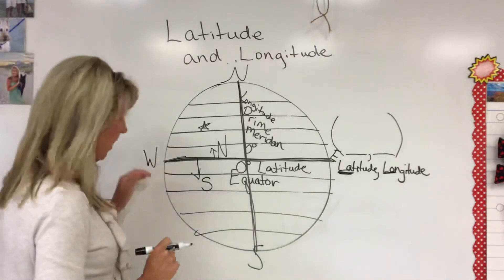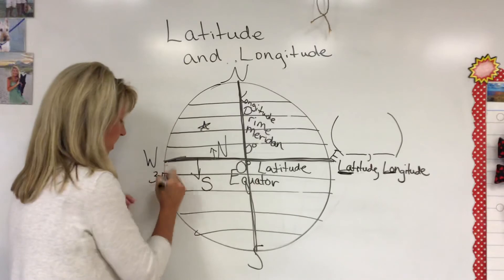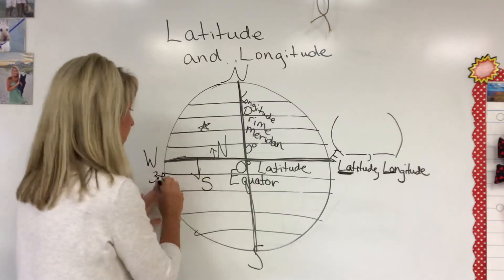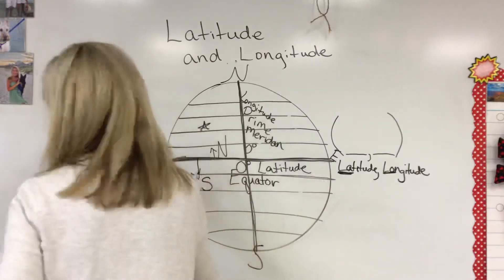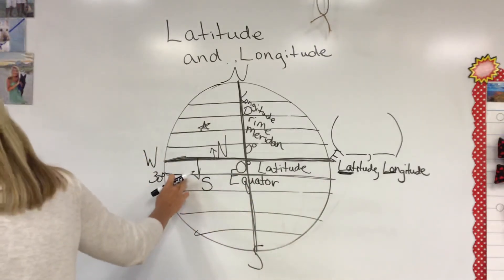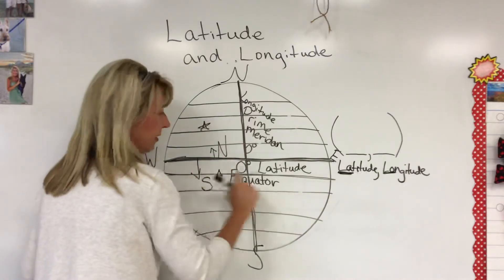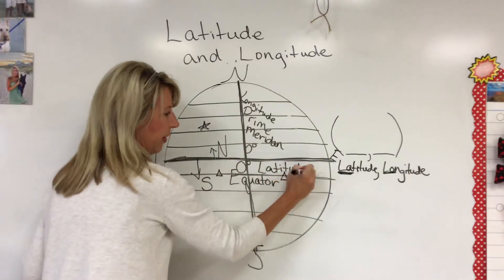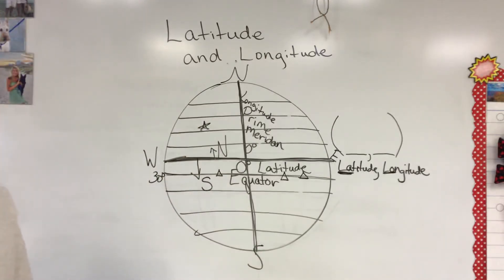30 degrees south - you're gonna find your line, let's pretend this one is 30, and we're going to find this latitude line which would be there. Then it says put a triangle on it, so it doesn't matter as long as it's on this line somewhere, you can put a triangle there.